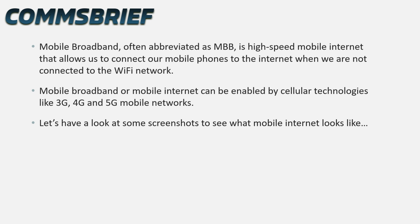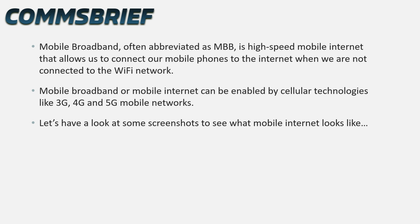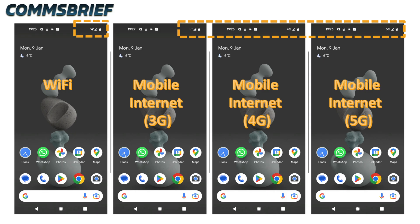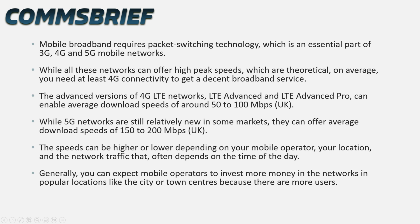Let's now look at some screenshots to see what mobile internet looks like. In this picture there are four screenshots: the one on the left shows a mobile phone connected to a Wi-Fi network, and the other three show the phone connected to mobile internet via 3G, 4G, and 5G. Mobile broadband is a terminology used to refer to mobile internet when it provides broadband speeds, and it requires packet switching technology, which is an essential part of 3G, 4G, and 5G mobile networks.